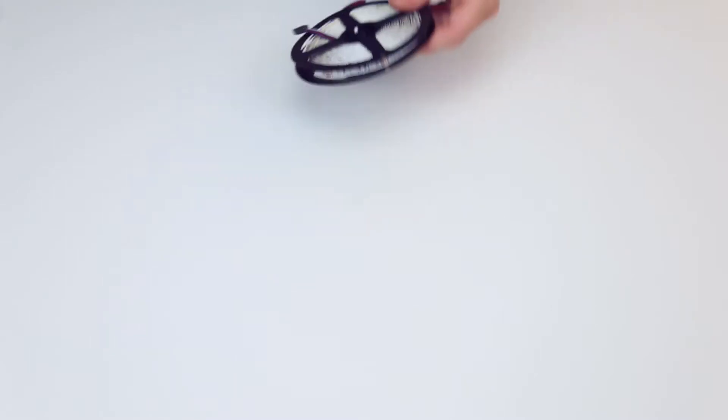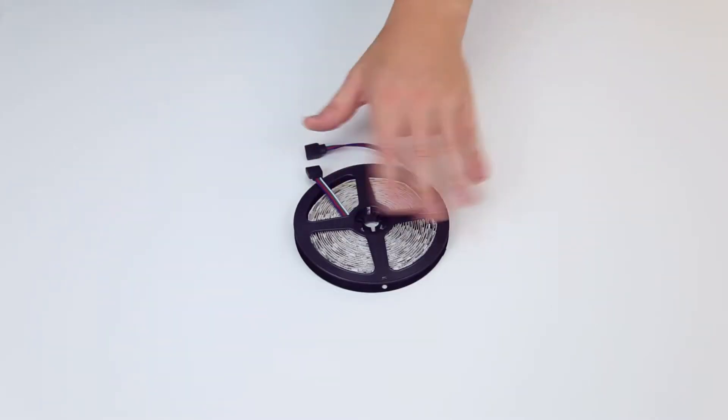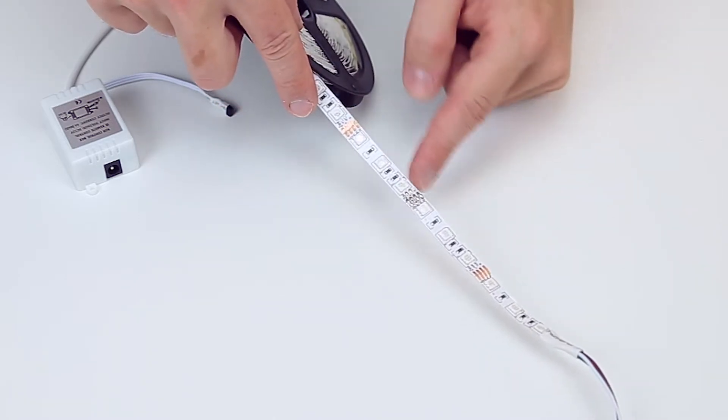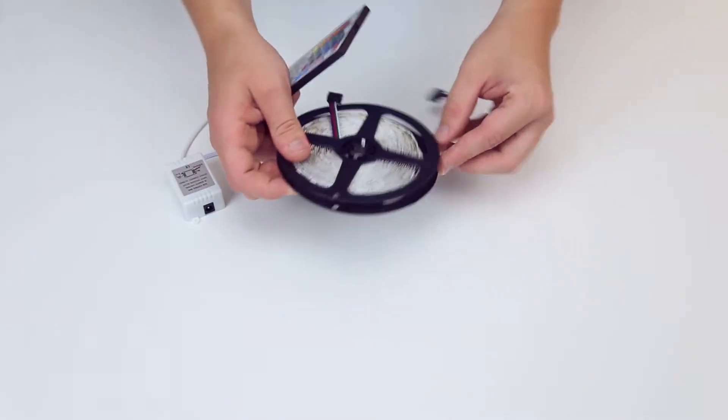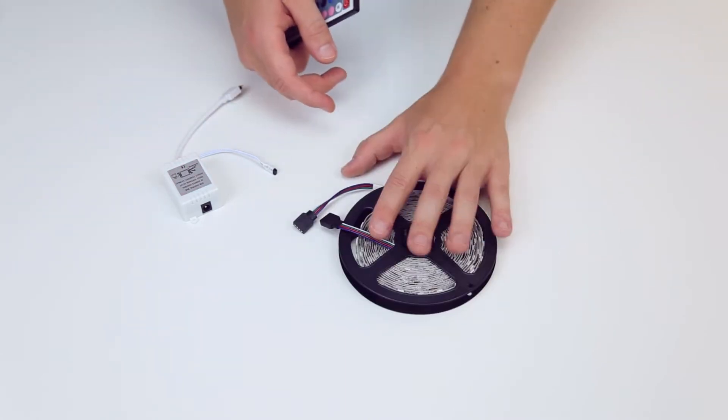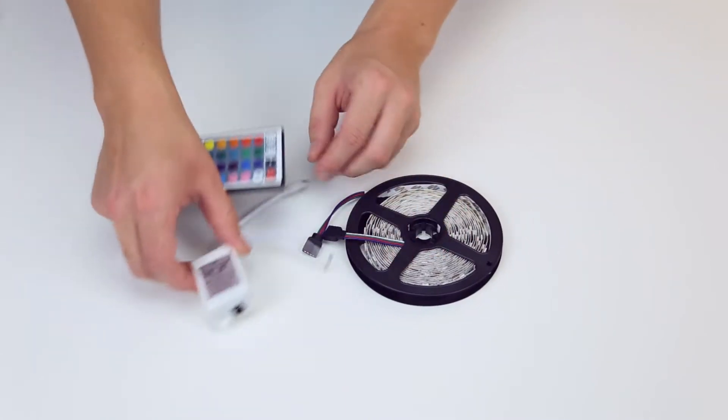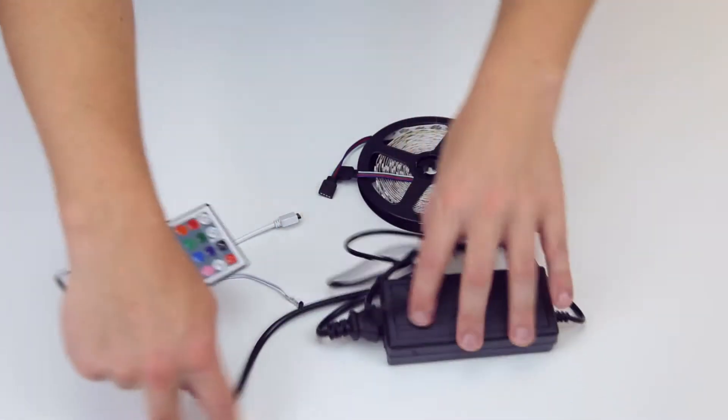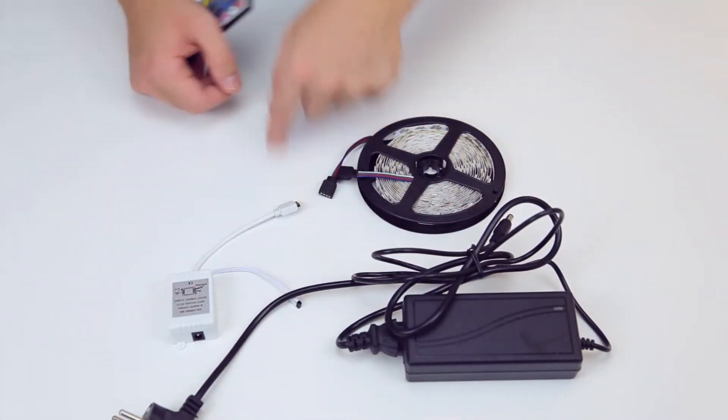You'll find all the parts down in the description and at the article link as well. But we're getting one of these 5 meter LED strips, RGB LED strips that can be cut off at different lengths. So we have this spool. I think it's really good because it comes with a few accessories.